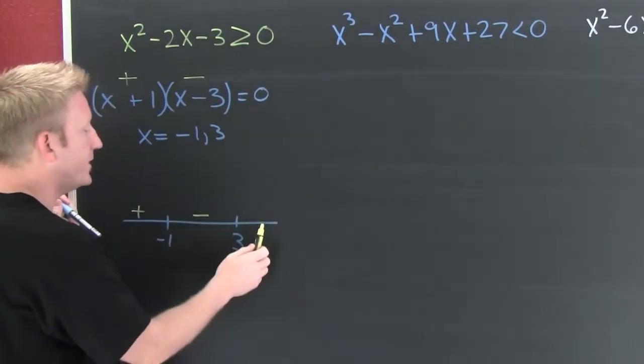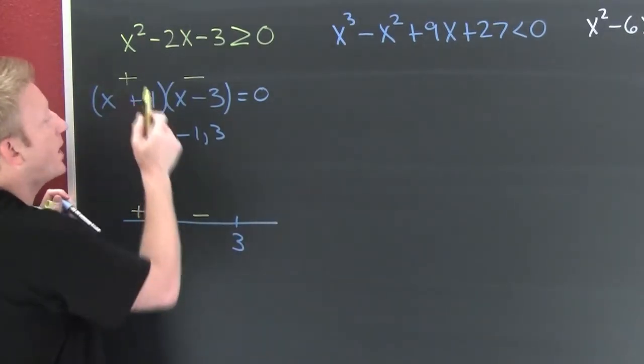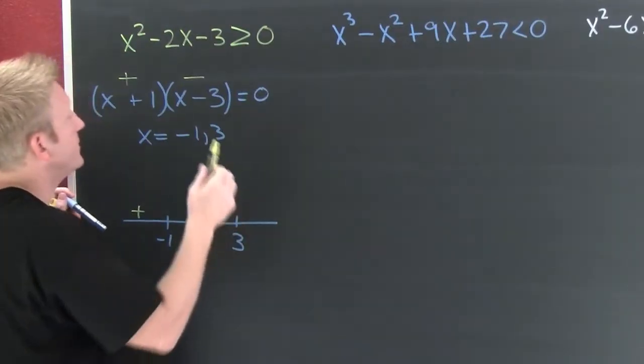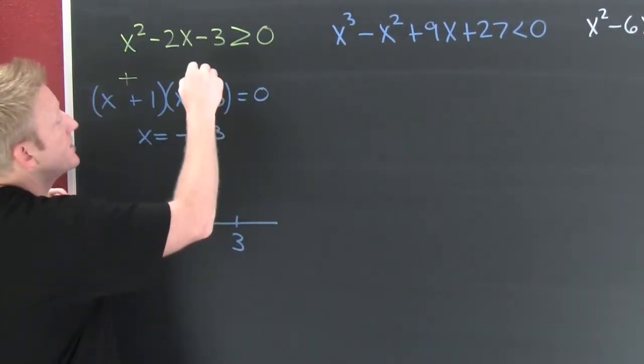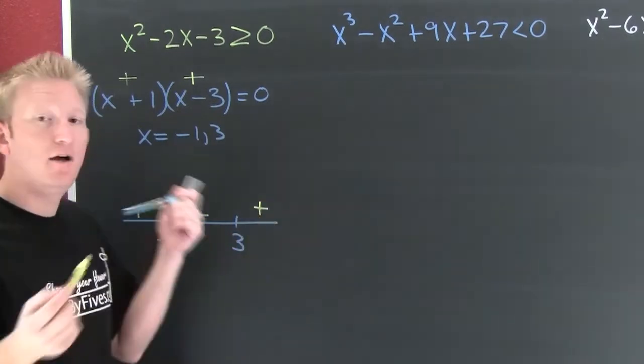Now I'm up here. A number bigger than three. How about ten? Ten and one is eleven, that's positive. I'm not concerned about the value. Ten is bigger than three, so this is positive. A positive and a positive are positive.